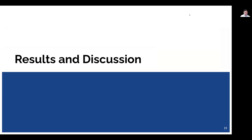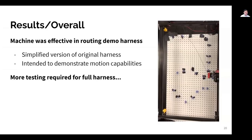Finally, this brings us to the results and discussion at the end of our project cycle. So overall, the machine was actually effective in routing our demo harness. This demo harness was a simplified version of the original sample harness provided by Northrop Grumman, and was intended only to demonstrate the motion capabilities and the geometric aspects of the harness that we were able to handle. Much more testing will be required to see if we can actually achieve the full harness.